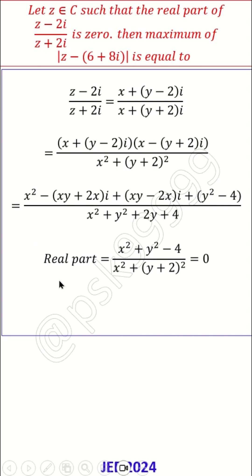So only the numerator is equal to zero. So that is x² + y² - 4 = 0. This is a circle with center (0,0) and radius 2.